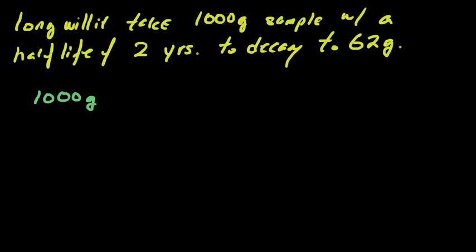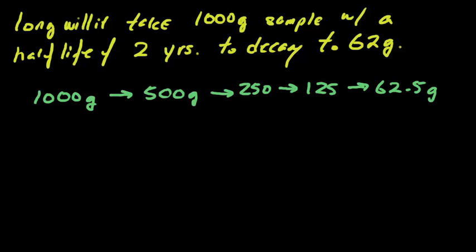So we're looking to see 1,000 decaying to 62. So we say after one half-life, we end up with 500 grams. Another half-life, we end up with 250. Another half-life, we end up with 125. And we're just constantly halving the amount that we had. And then one more half-life, we have 62.5 grams.